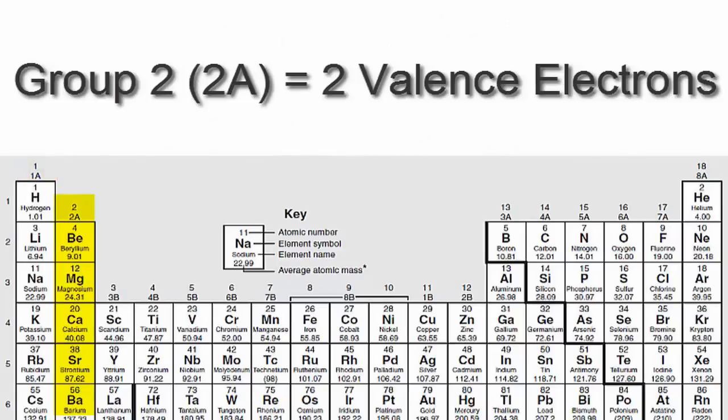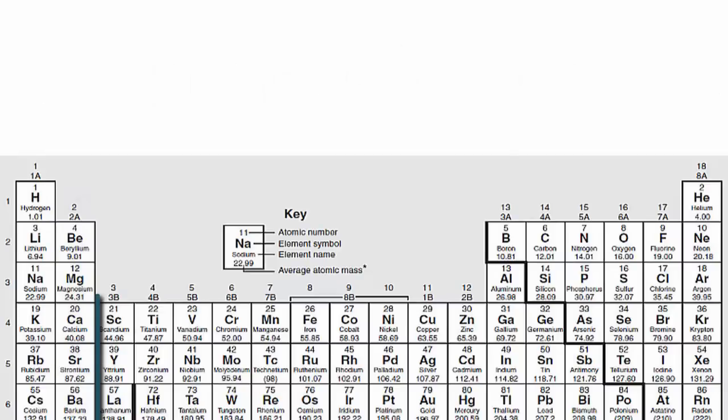If you look at group 2 or 2A, you'll see that those elements have two valence electrons. We'll skip over the transition metals, since they're a bit more complicated and probably don't apply to you.